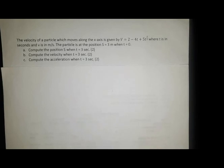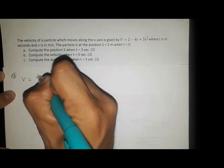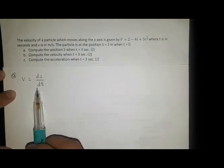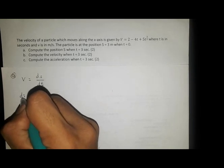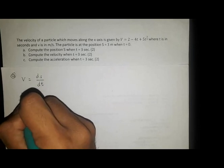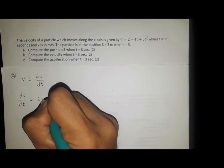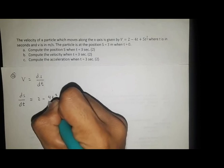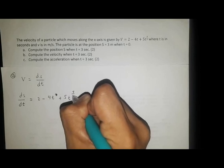As stated previously, v is equal to ds over dt, or the change in position with respect to change in time. So by substitution, ds over dt is equal to 2 minus 4t plus 5t raised to 3 halves.